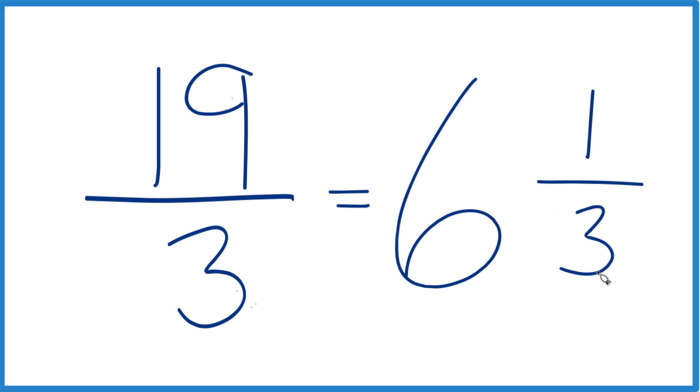We can check that. 6 times 3 is 18, 18 plus 1, there's your 19. And we just keep that 3 the same across.